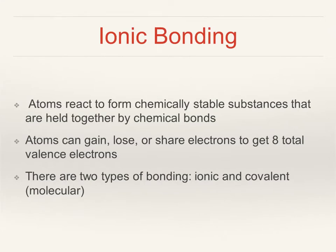When we talk about bonding, there are two different types of bonding: ionic and covalent. We're going to talk about covalent later on in the week. Ionic bonding is when atoms react and form chemically stable substances held together by chemical bonds. The chemically stable substances means that they end up having all of the electrons that they need in order to fill their outer orbital. Atoms can gain, lose, or share electrons in order to get eight total valence electrons. Gaining and losing electrons means they become ions, and sharing electrons is what we'll talk about later with covalent bonding. Another word for covalent bonding is molecular.